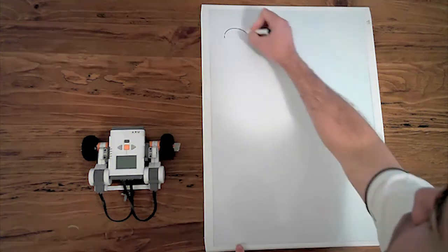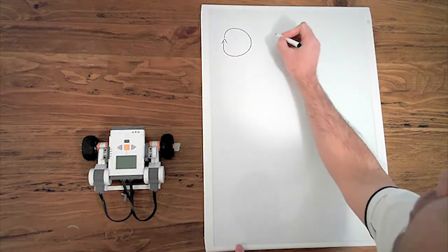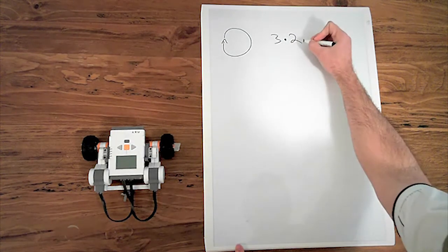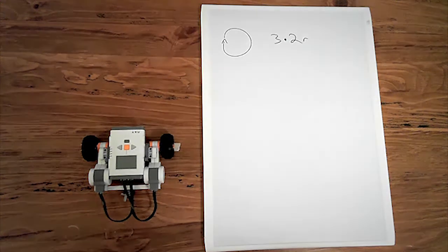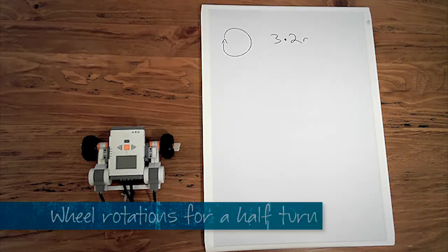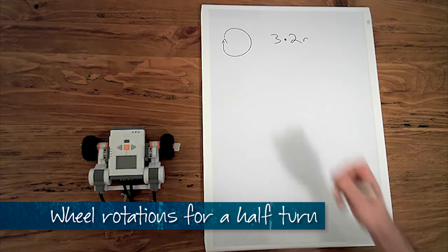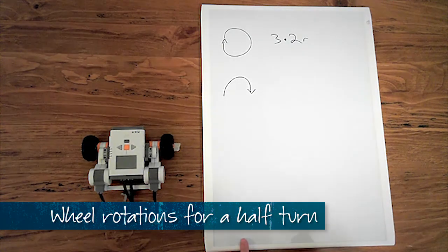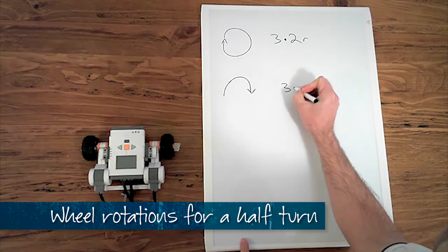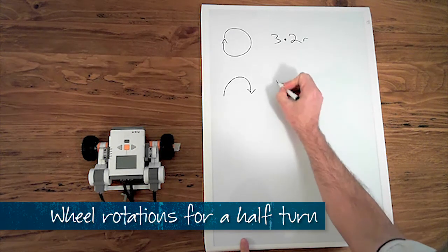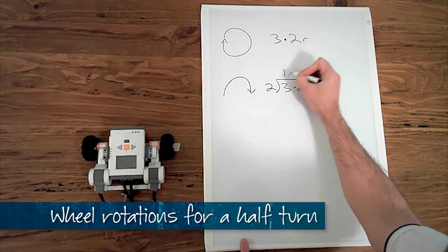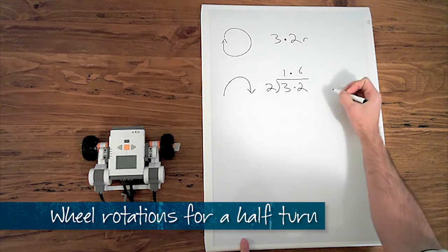Now that I know to make my robot do a full rotation it takes 3.2 rotations of the wheels, using that information I can now calculate how many wheel rotations I need to do a half turn. To do a half turn we will take our 3.2 rotations that we needed for the full turn and divide it by two. This gives us 1.6 rotations.